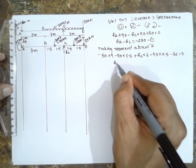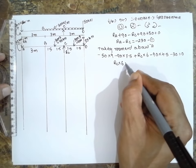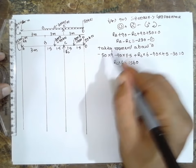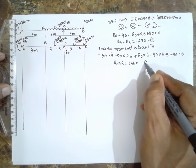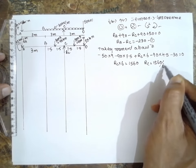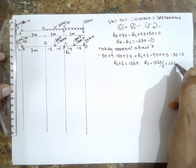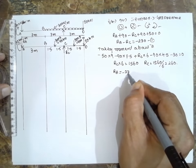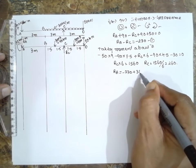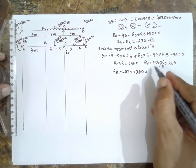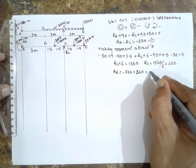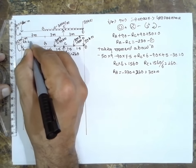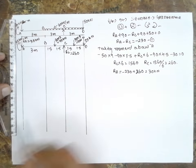Solving the moment equation, RC into 6 equals 1560. Therefore RC equals 1560 divided by 6, which is 260 kilonewton. Substituting into equation 1: RA minus 230 plus 260 equals 30. So RA is 30 kilonewton and RC is 260 kilonewton.